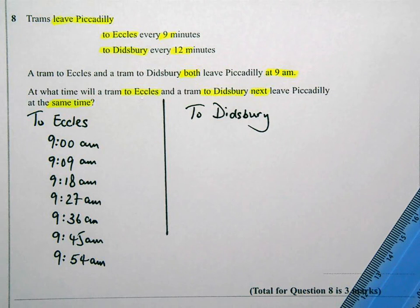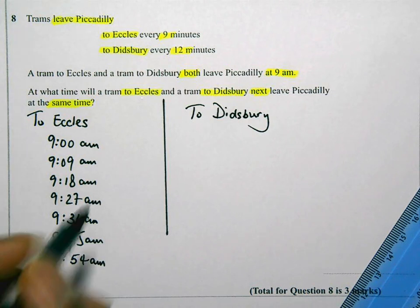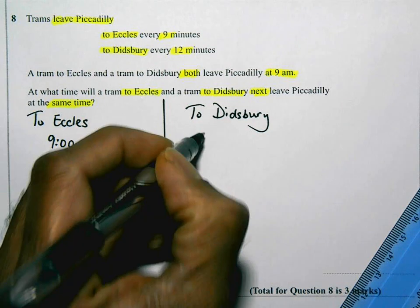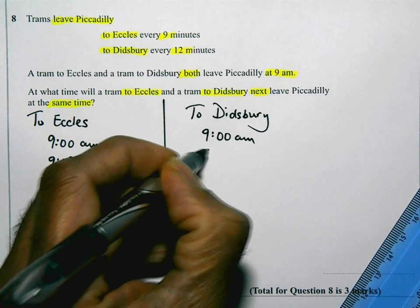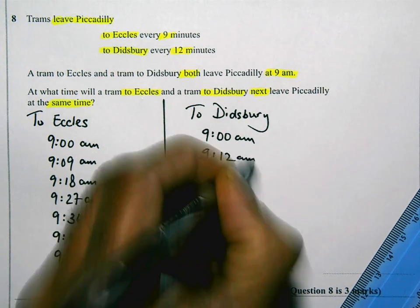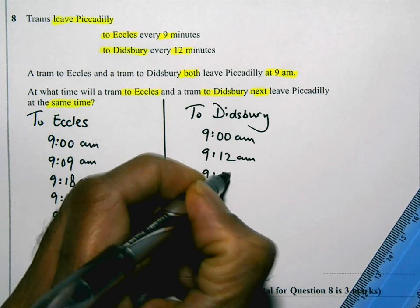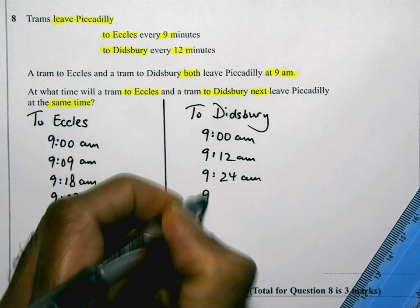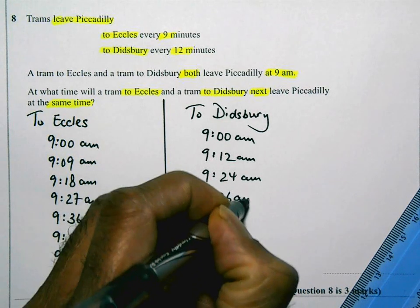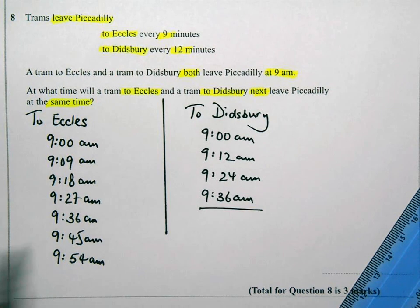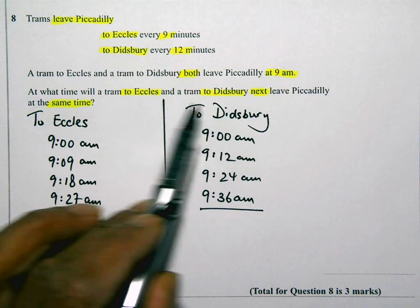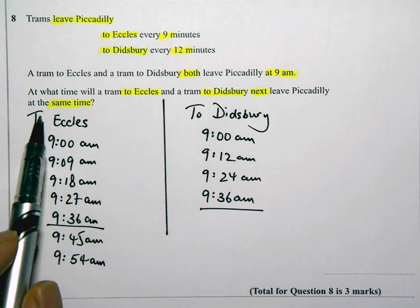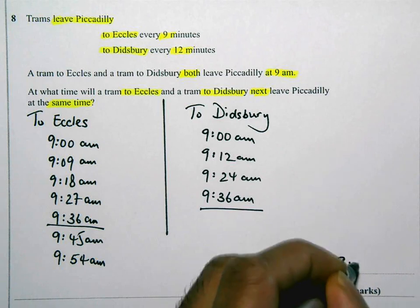The trams that leave to go to Didsbury leave every 12 minutes. So one leaves at 9 a.m., the next at 9.12 a.m., then 9.24 a.m., then 9.36 a.m. I'll stop there because 9.36 appears on both sides. So to answer this question — at what time will a tram to Eccles and a tram to Didsbury next leave Piccadilly at the same time? — that's going to be 9.36 a.m.